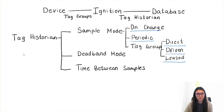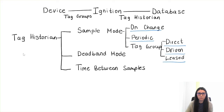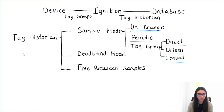The on change mode is in most scenarios the most preferred and most used one, because we are storing values into the database only when the tag value has changed. That gives us the raw data in the database — nothing more — which gives us the flexibility to perform analysis, aggregation, fill holes, and so on.